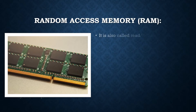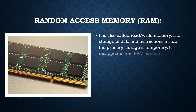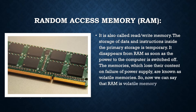RAM is also called read-write memory. The storage of data and instructions inside the primary storage is temporary. It disappears from RAM as soon as the power to the computer is switched off. The memories which lose their content on failure of power supply are known as volatile memories. So RAM is a volatile memory.